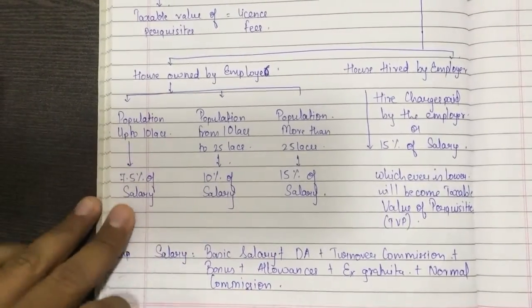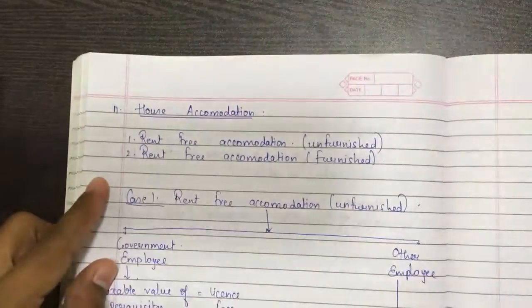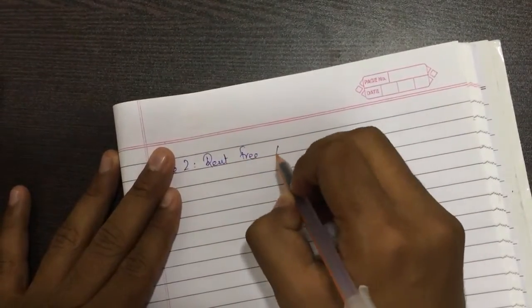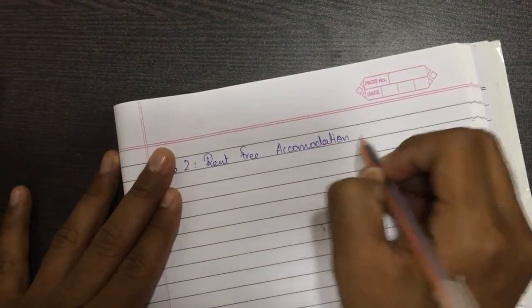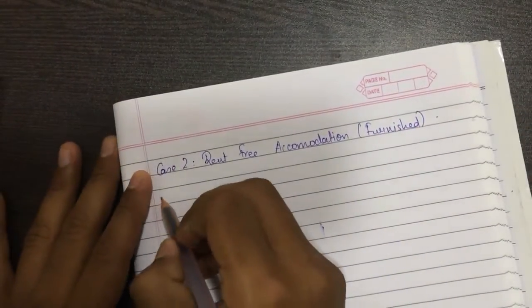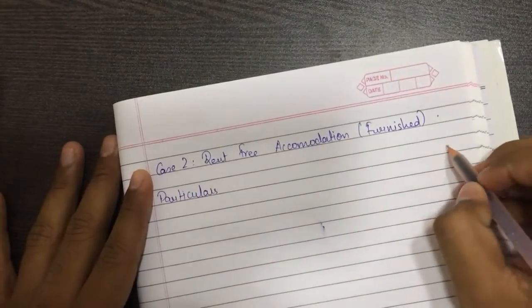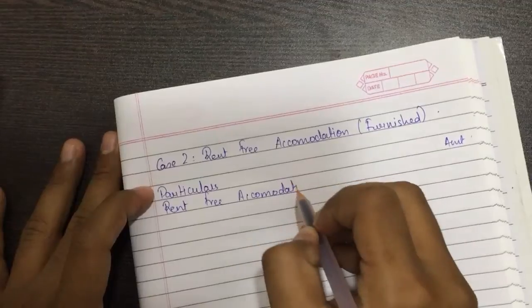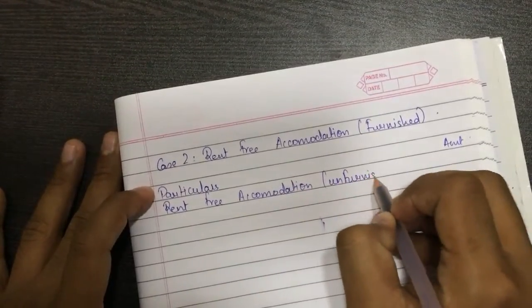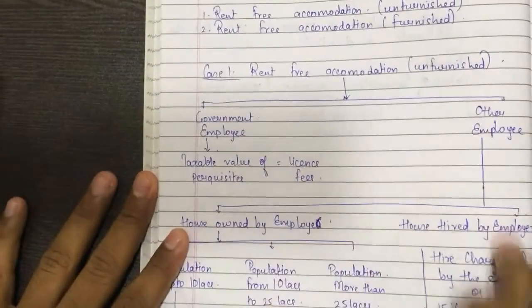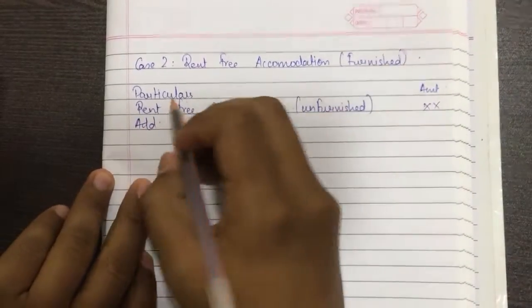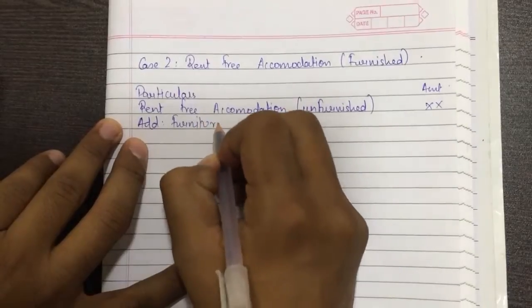Before explaining, let me complete Case 2 also, then I'll explain both cases. Case 2 is rent-free accommodation furnished. Case 2 is very simple if you know Case 1. To solve it, we draw a table with particulars and amounts. First, you calculate rent-free accommodation unfurnished — so in furnished also, you first find the unfurnished value using the entire process already described. Then add furniture benefits.